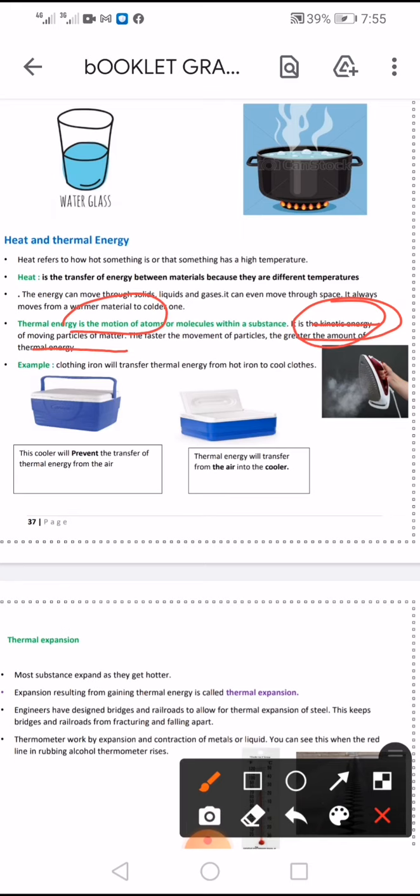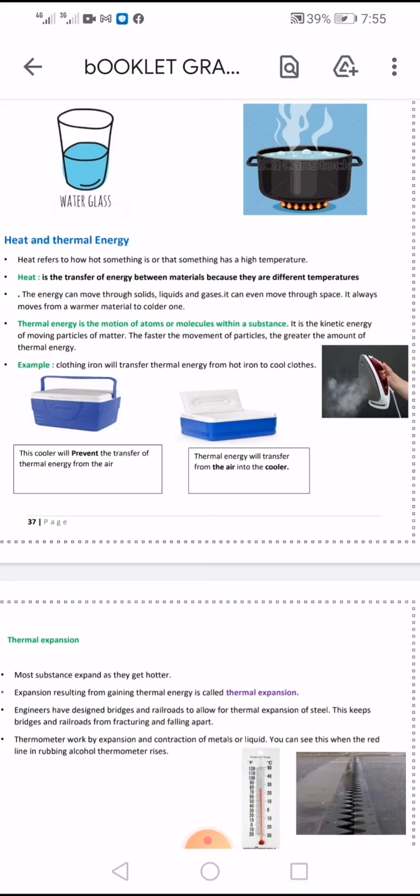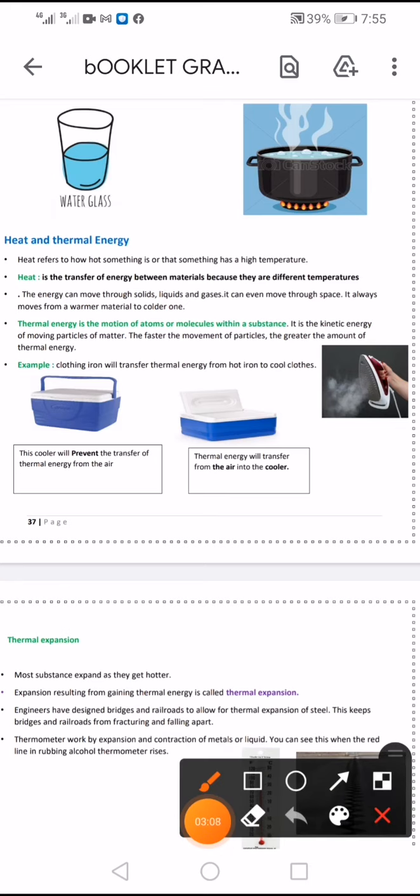So it has kinetic energy of moving particles of the matter. The faster the movement of particles, the greater the amount of thermal energy. For example, a clothing iron will transfer thermal energy from the hot iron to the cool clothes.